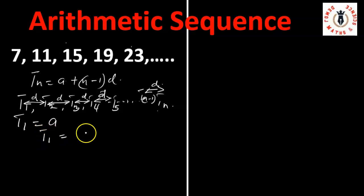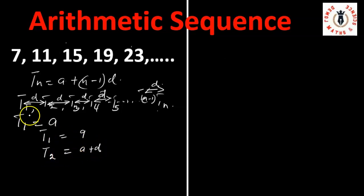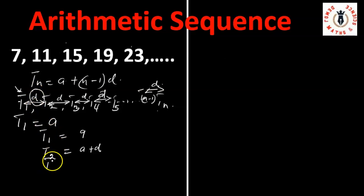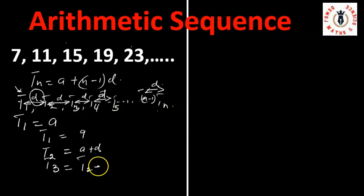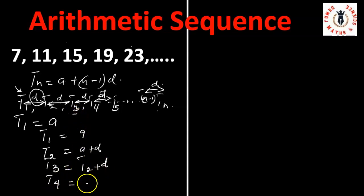If the first term t1 equals a, then t2, the second term, equals a plus d. From there, t1 is a, so t2 is t1 plus d. Then t3 is t2 plus d, and t4 is t3 plus d.